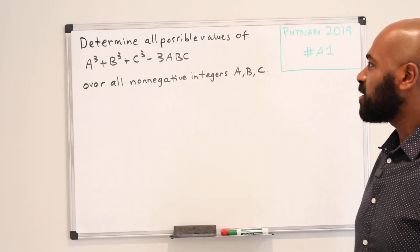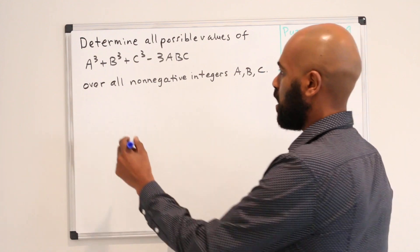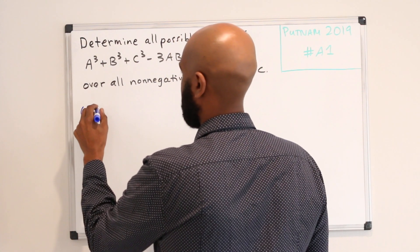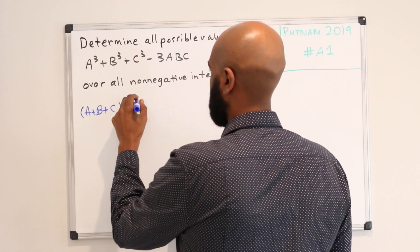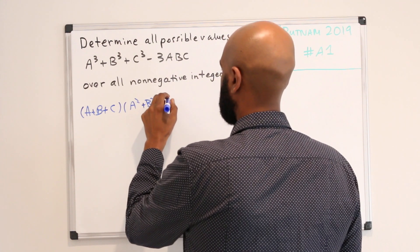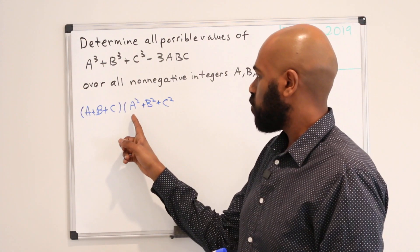Okay, so the first observation I want to make is that this expression actually factors. So you might pretend to factor it as (A + B + C) times (A² + B² + C²), but if you do that then you run into a bit of a problem because there are these cross terms like A²C and B²A etc that need to be dealt with.